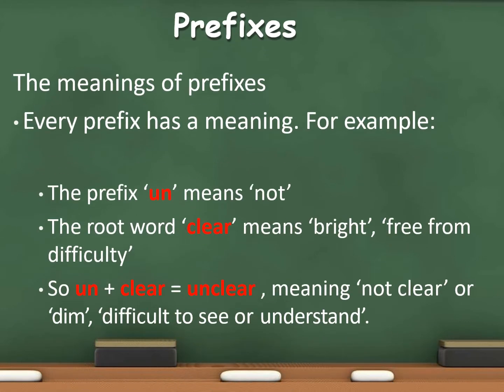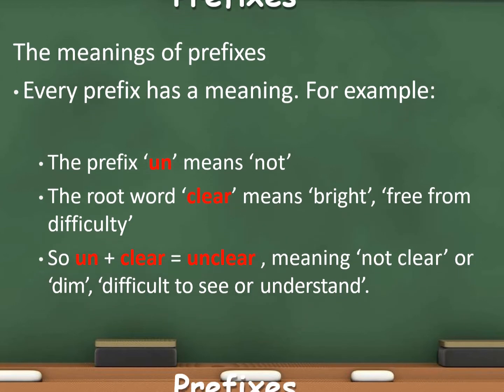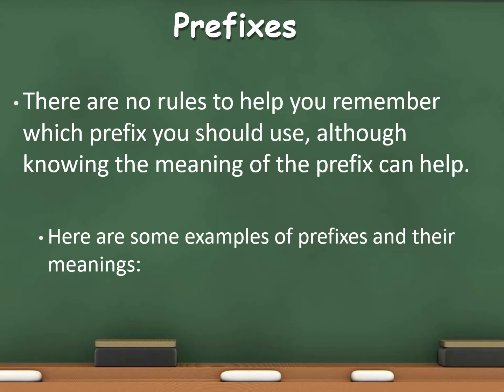Every prefix has a meaning. For example, the prefix 'un' means 'not.' The root word 'clear' means bright or free from difficulty. So 'un' plus 'clear' is 'unclear,' meaning not clear, or dim, difficult to see or understand.